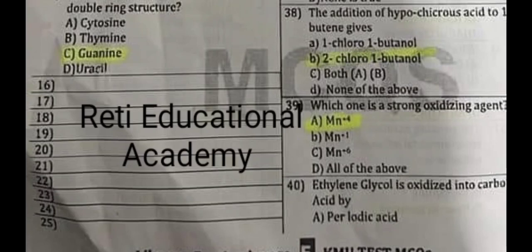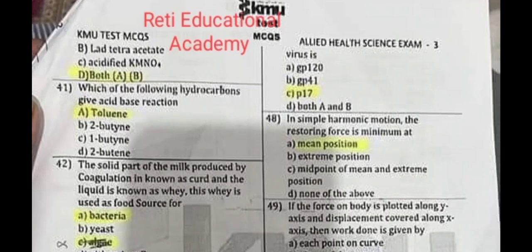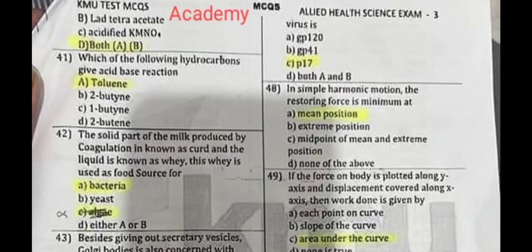The correct answer is both A and B. Subscribe to the Reti Educational Academy YouTube channel — I will upload more past papers related to Khyber Medical University tests on 1st October 2023 and 15th October 2023. I will also share the Khyber Medical University sample test paper conducted on 16th September. Question number 41: Which of the following hydrocarbons gives an acid-base reaction? The correct answer is toluene.